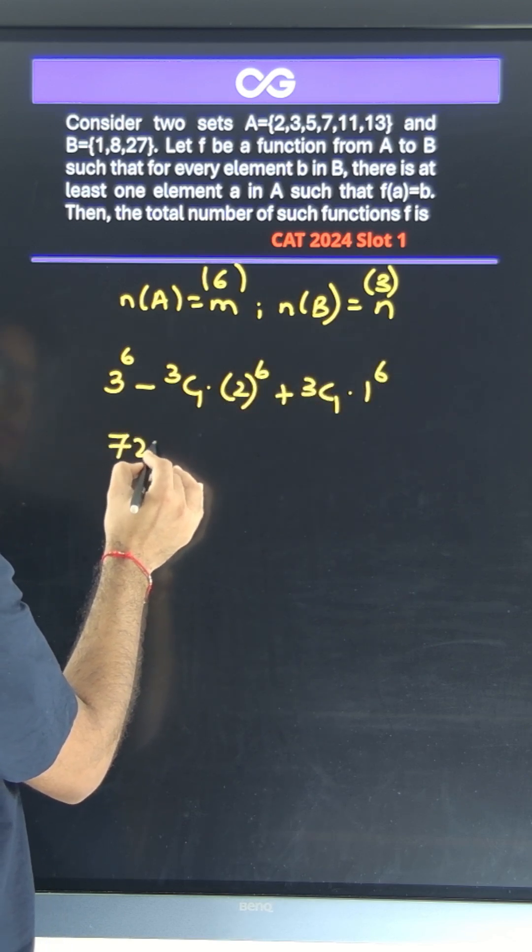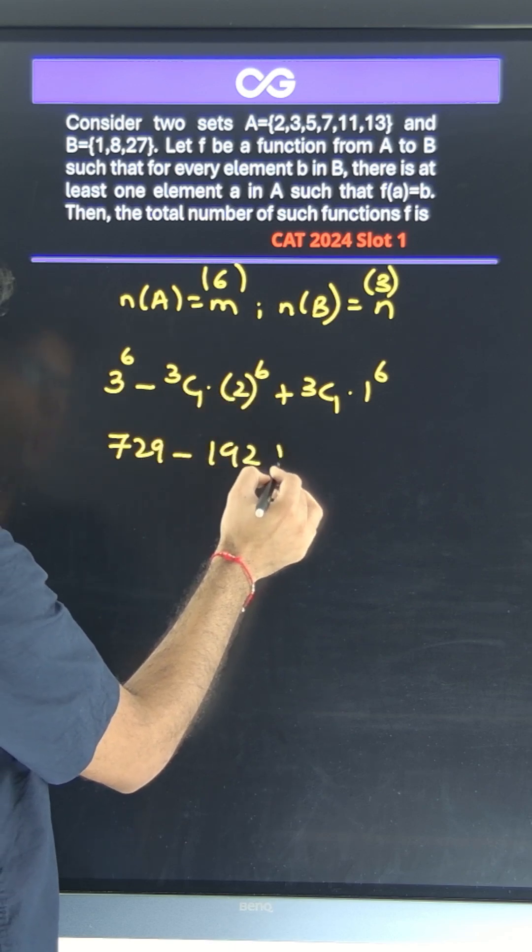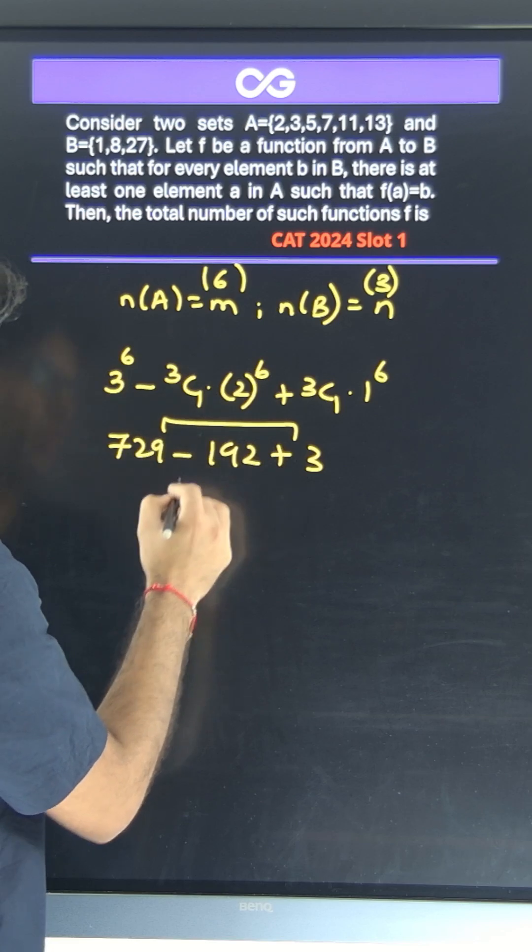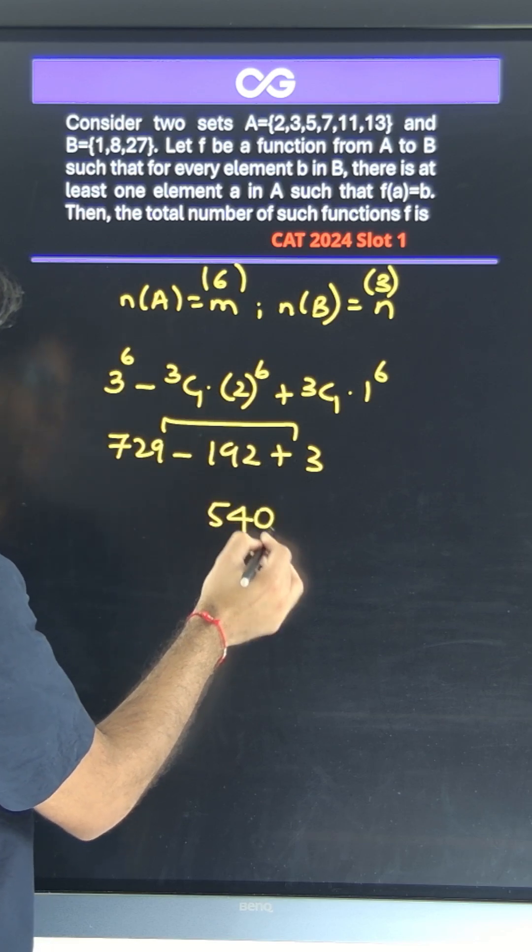This becomes 729 minus 3 times 64, which is 192, plus 3. That is 732 minus 192, which gives 540 as your answer.